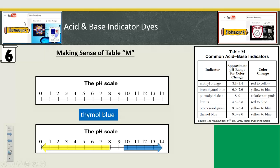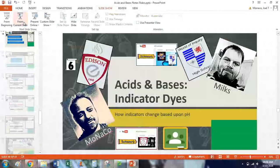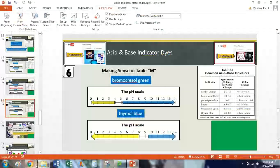Above the right-hand number is the right-hand color. And that's how you interpret Table M when you're using indicator dyes. Thanks for watching. See you in lesson 7, where we're going to do neutralization reactions.